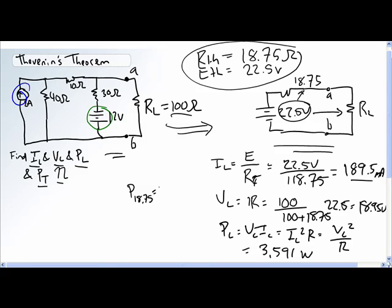For the 0.75 ohm resistor, well IL squared R because it's a series we can use that same current. So it's 18.95 milliamps squared times 18.75 ohms, 673.3 milliwatts.